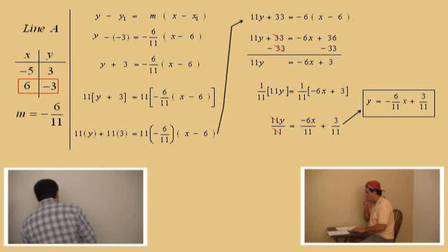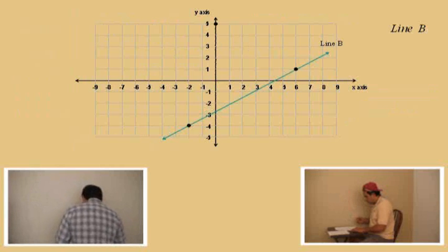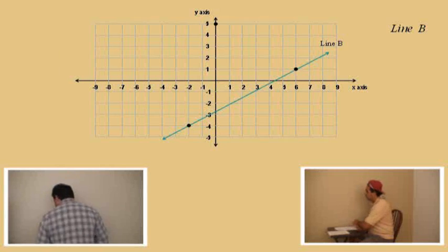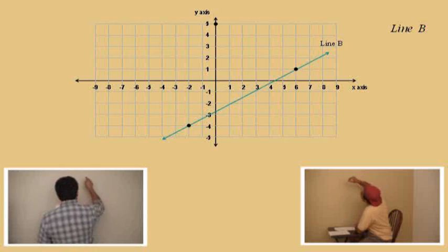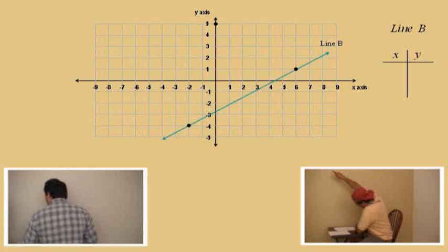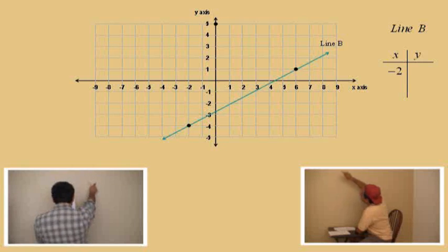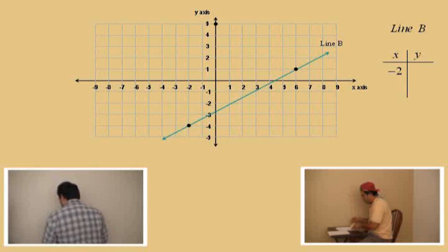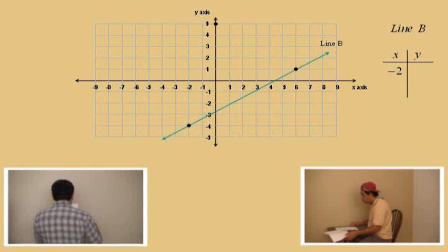Let's do another one — that was so much fun. Here's our next problem. We're doing line B, Charlie. We have two points up there. Let's start at this lower point here. Let's go ahead and make a table. Charlie, what's the x value of this lower point? Negative two. Very good. What's the y value? Negative four. Very nice, Charlie.